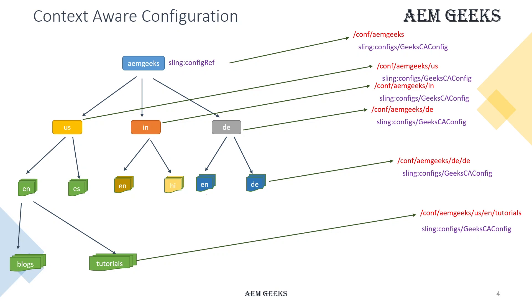Imagine how difficult this would be through OSGI configuration — you could not manage it at all. Writing context-aware configuration is very easy. You create a configuration similar to an OSGI configuration and only need three lines of code to call it and get the configuration object. I'll explain and show you in the demo.